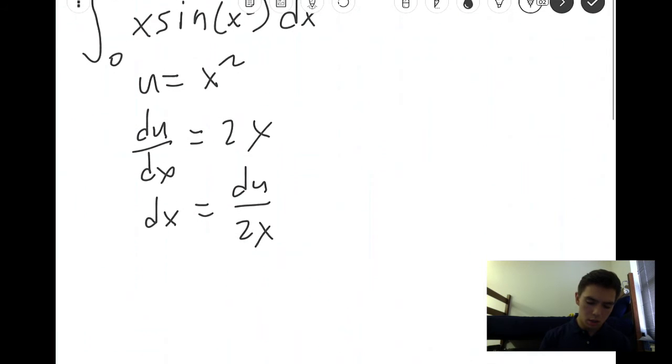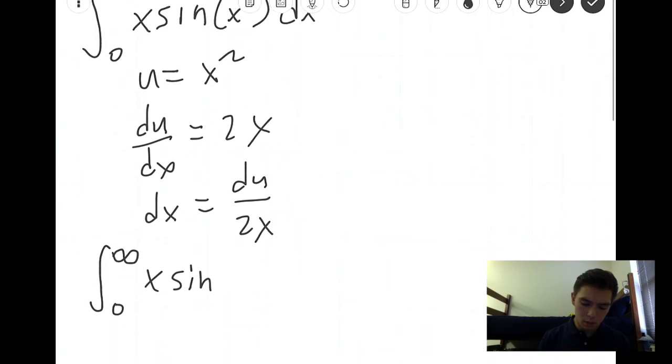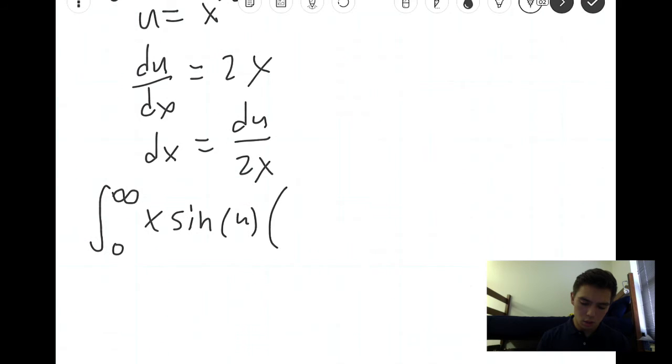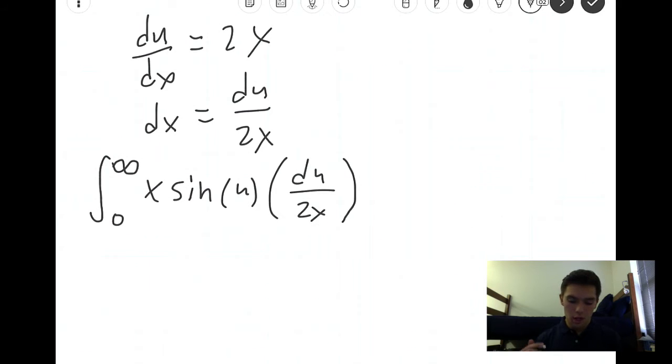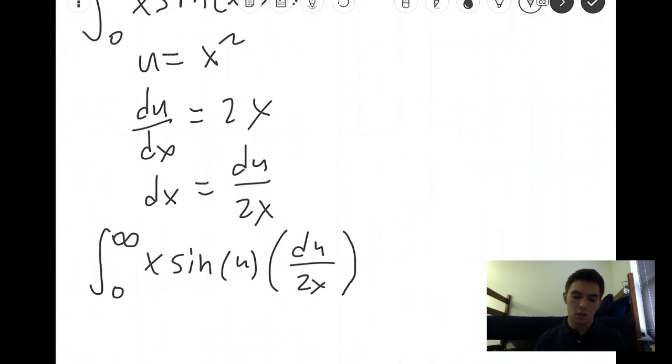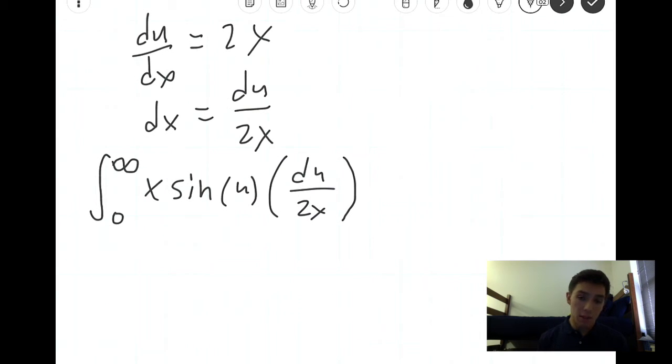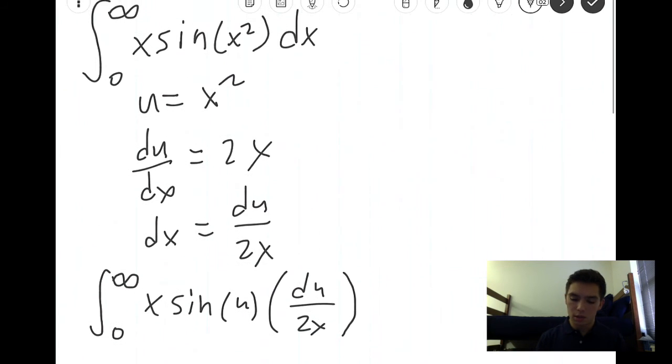And now, this is the power of u substitution. When you designate certain variables or functions within the integral and differentiate them, they will often times cancel. And that's what happens in this case, and is what the usefulness behind u substitution, because now that gives us a much more manageable and simpler integral to evaluate.